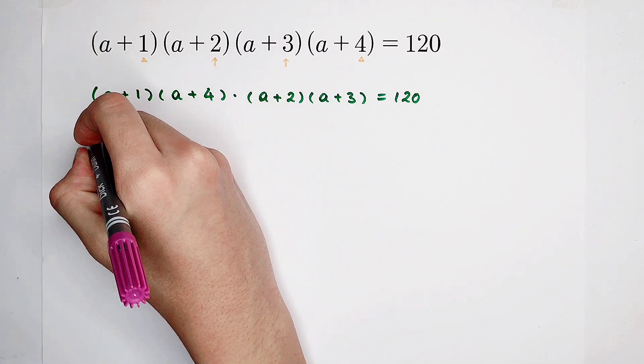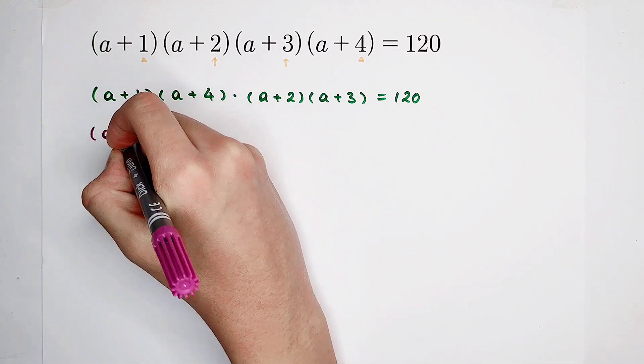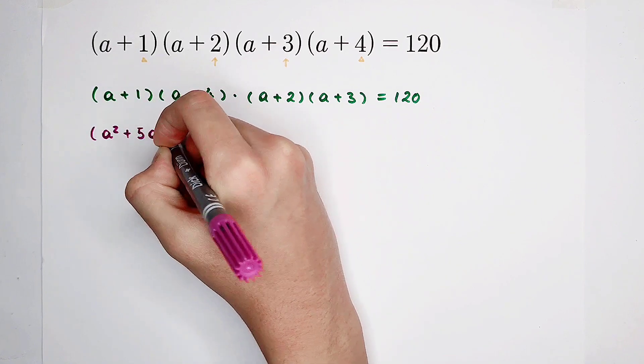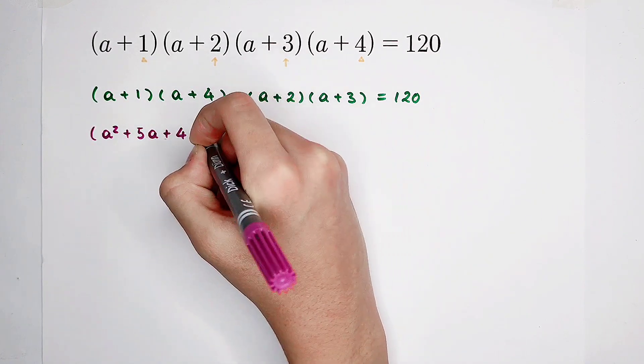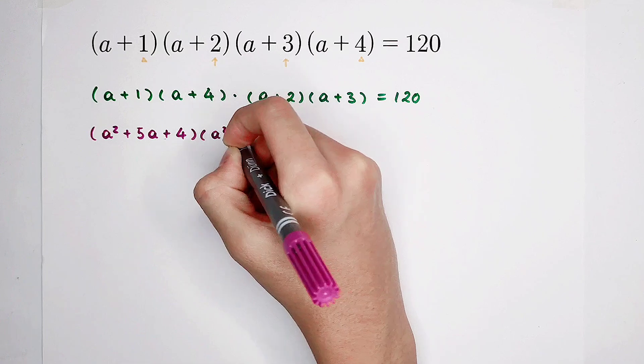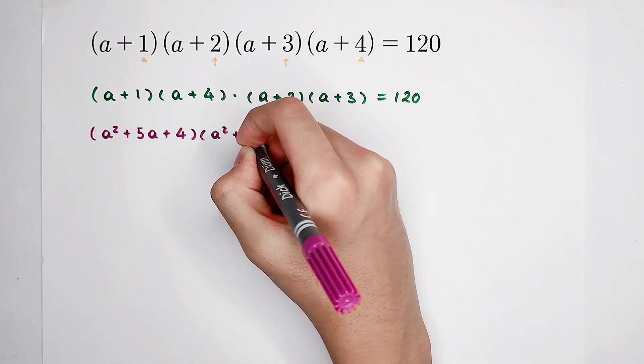expand this term. It is a squared plus 5a plus 4. And here, it is a squared plus 5a plus 6.